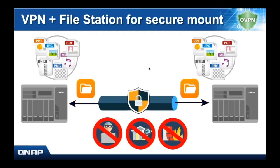So once you have a VPN server set up on one NAS, you can then join the other NAS to that VPN server as a VPN client. If one NAS is a client of the other NAS's VPN server, then you can do that encrypted file transfer through that heavily encrypted VPN tunnel. So this is great for remote replication when you have sensitive data that you want to make sure no one gets — so you want to use that VPN tunnel.